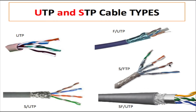Last but not least, we have SF/UTP. SF stands for shield and foil. There is no foil around the individual twisted pairs here, but you have two types of shielding blocking external electromagnetic fields: a metal shield and foil. This makes it a much better cable for environments with strong external electromagnetic fields, as both the metal shield and foil work together to prevent interference from reaching your copper wires.